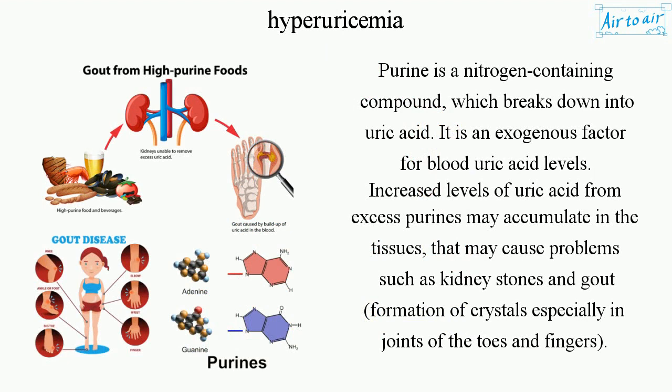Purine is a nitrogen-containing compound which breaks down into uric acid. It is an exogenous factor for blood uric acid levels.